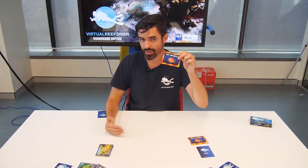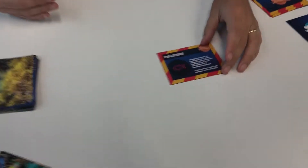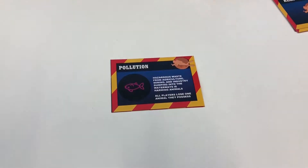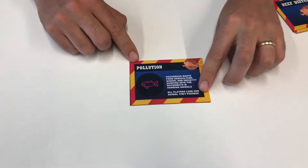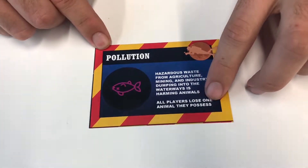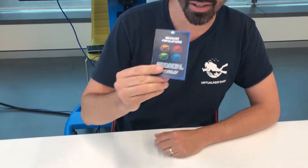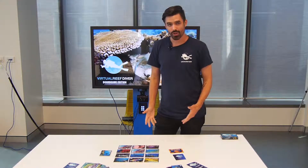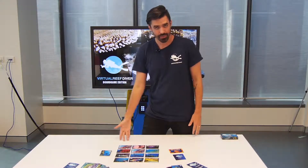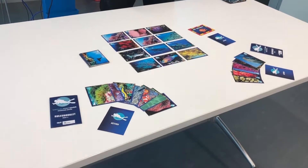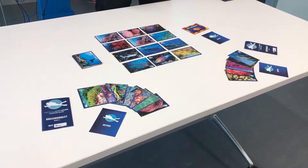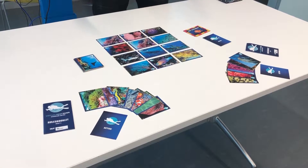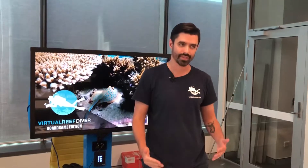Now that we've cleared the reef we'll be drawing a reef disturbance card. In this case we've got pollution, and one of two things is going to happen: either we follow the instructions on the card and we're all going to lose an animal, or either team can play an action card to stop that effect from happening and save your points. Now that we've gotten through our first reef disturbance we'll draw a new reef, and we'll keep doing that until we've gone through three reefs and three reef disturbances in total. Then we tally up our points and whichever team has the most wins.